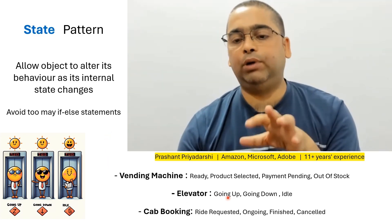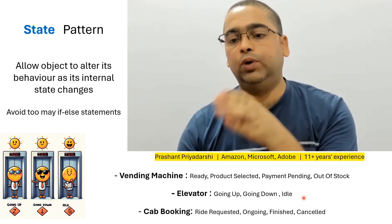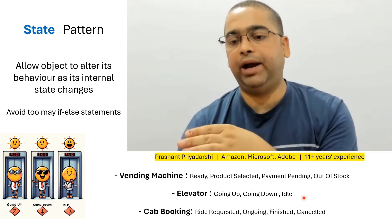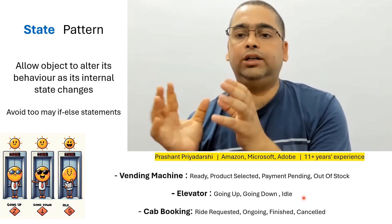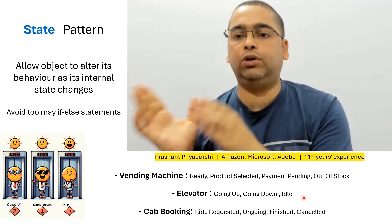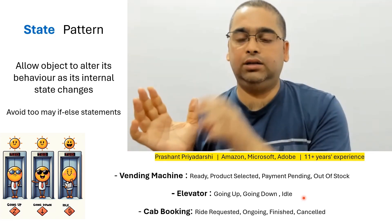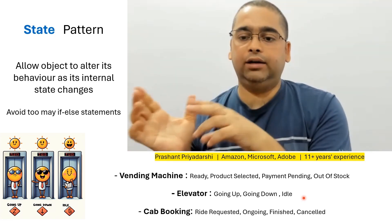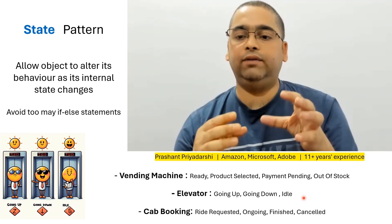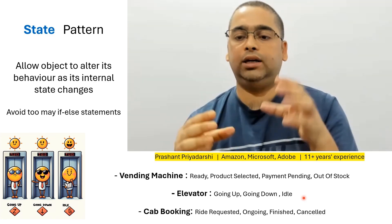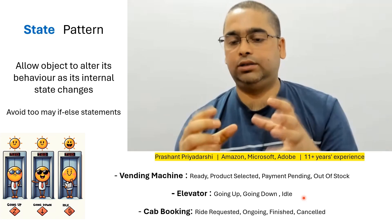Take the example of a smart elevator system. The lift can be either going up, going down, or it can be idle. Suppose a user is on the 4th floor and they want to go to the 8th floor. They press the destination floor 8. Now there can be multiple lifts in that elevator system, and the elevator system will send this request to all the lifts to find the optimal lift.